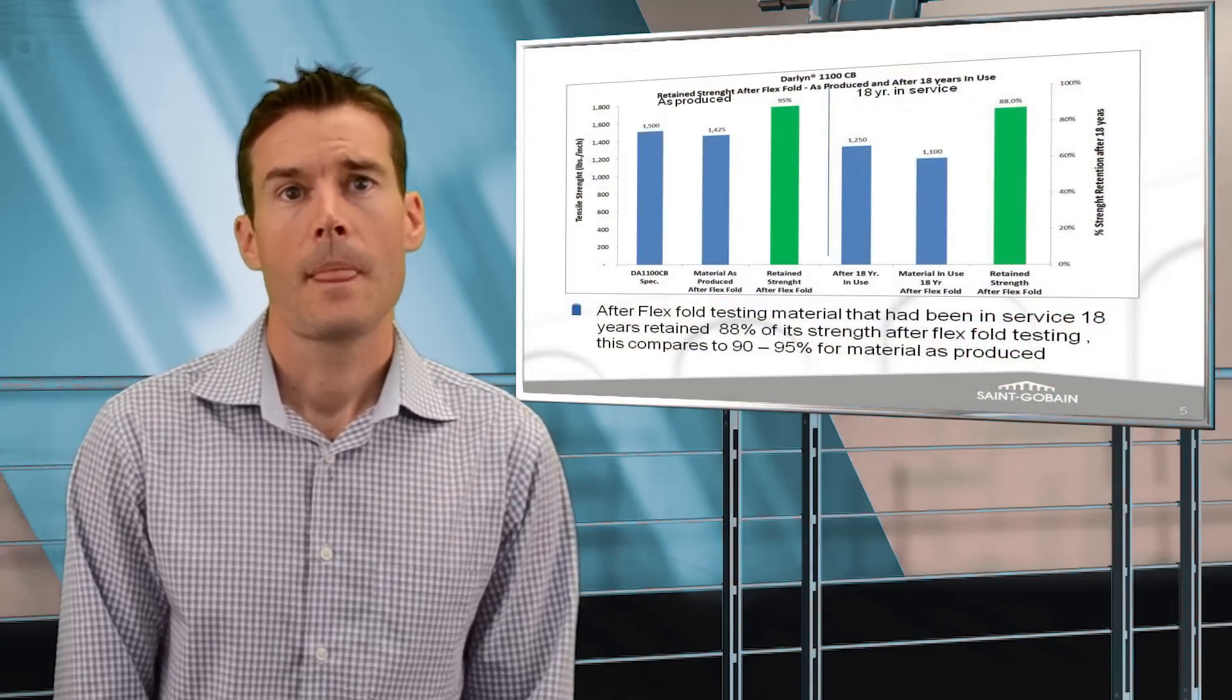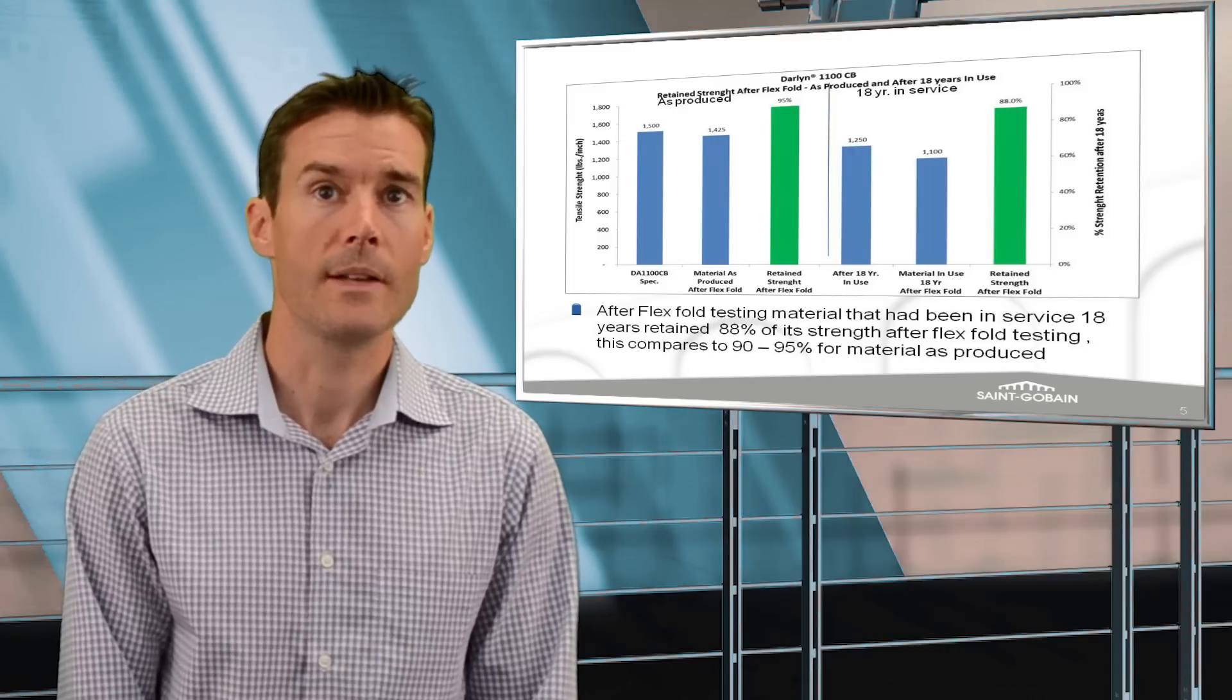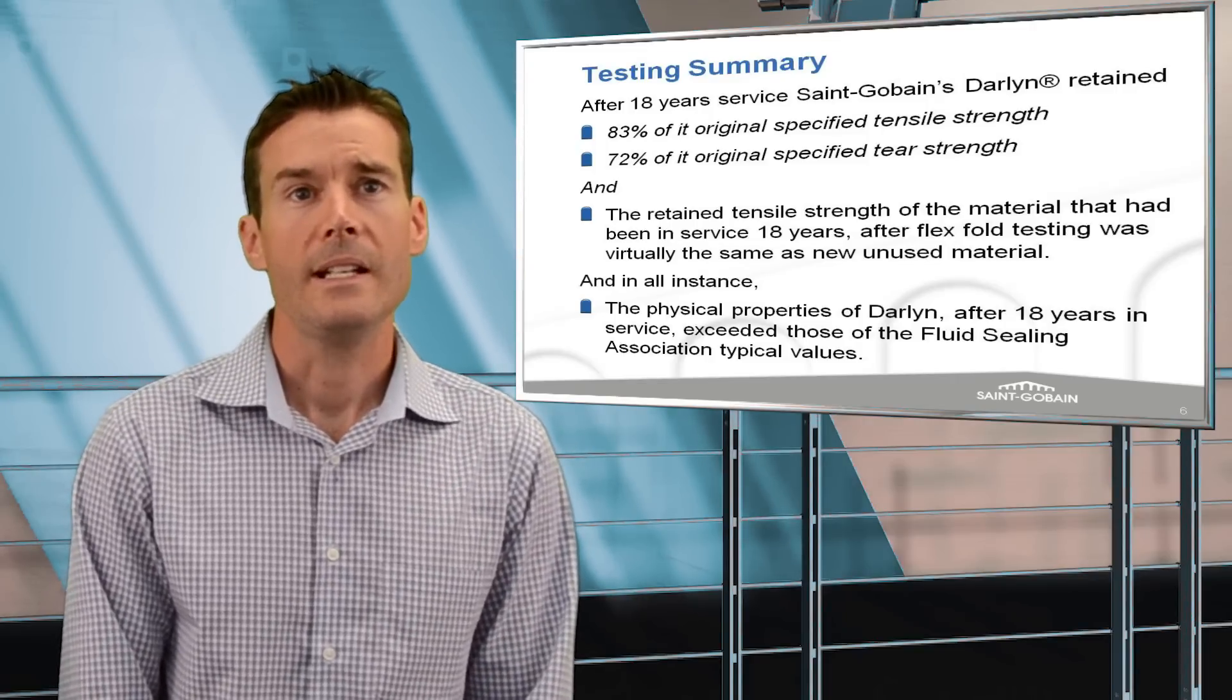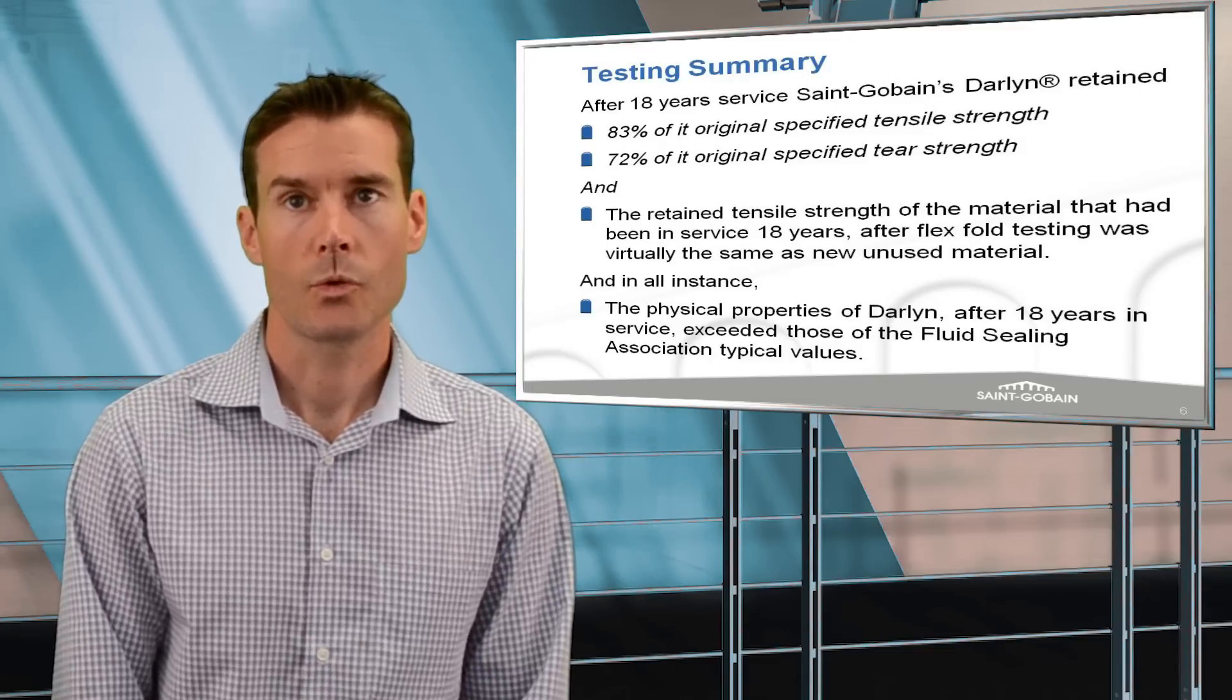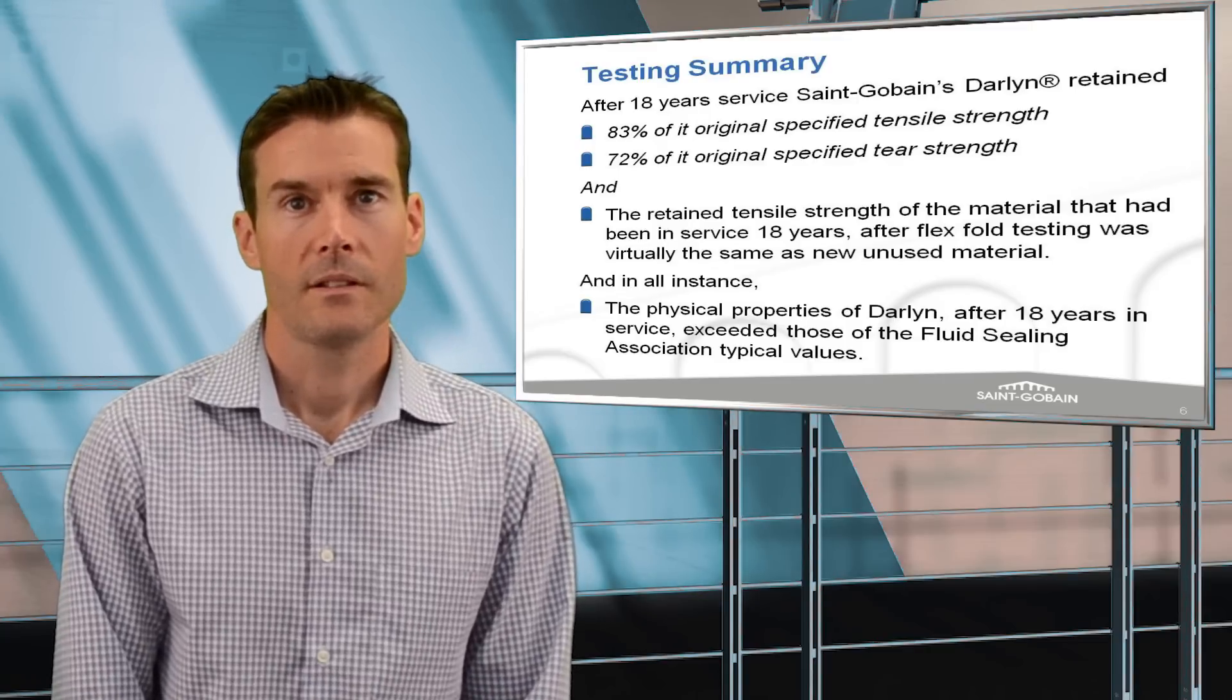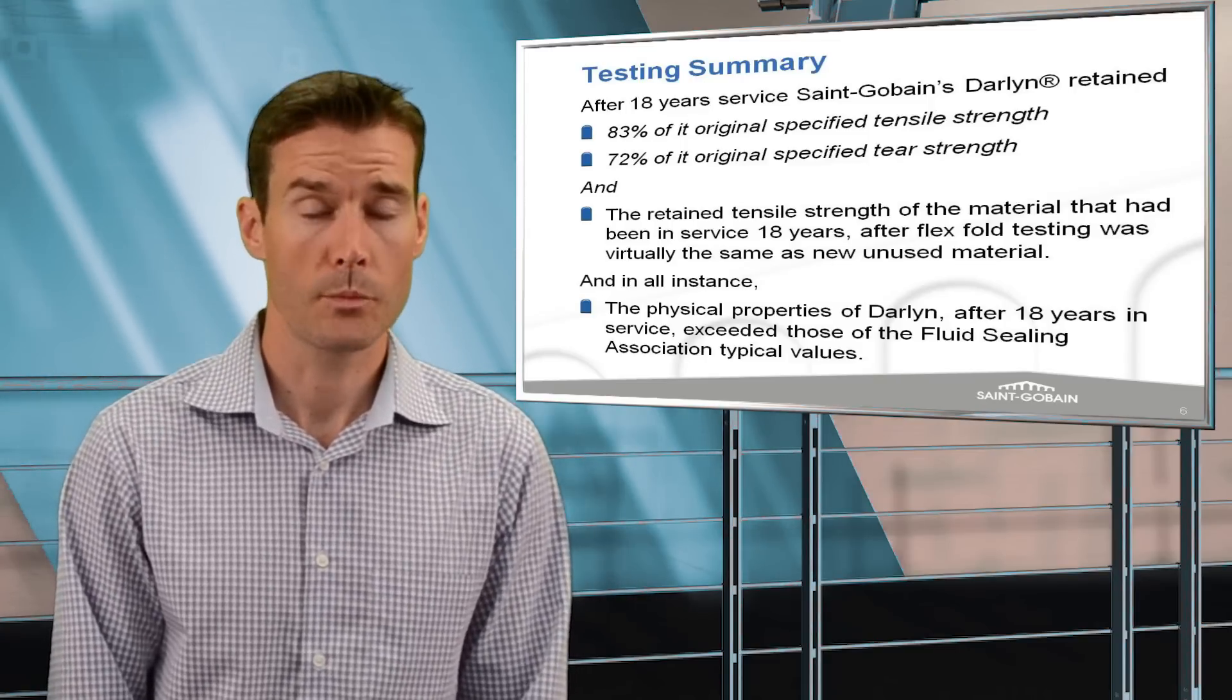Lastly, the retained tensile strength after flex-fold testing was virtually unchanged from the retained strength that is typical for the Darlin material as originally produced. In summary, this 18 years of service Darlin retained 83% of its original tensile strength, 72% of its original trapezoidal tear strength, and all of its retained tensile strength after flex-fold testing. Finally, all physical properties of the Darlin material exceeded those of the fluid sealing association's typical required values for these properties.